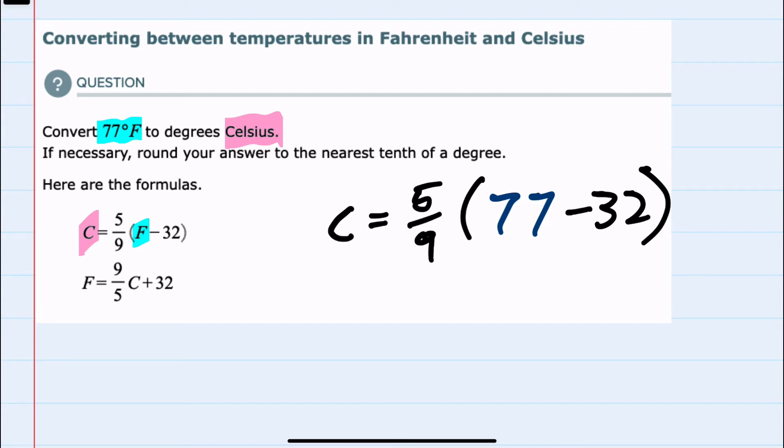I would need to follow the order of operations that says we work inside the parentheses first. So I could simplify this to Celsius equals 5 ninths. 77 minus 32 would be 45.